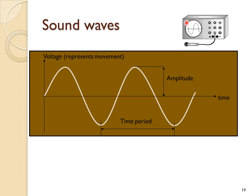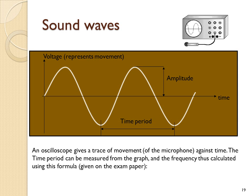If you connect a microphone to an oscilloscope, you can create a trace that represents the sound. The trace would be voltage produced by the microphone against time, but the voltage represents the position or movement of the microphone head. The time period can be measured from the time taken from one wave to the next, and you could use the frequency formula to calculate the frequency of the wave if you knew its time period.